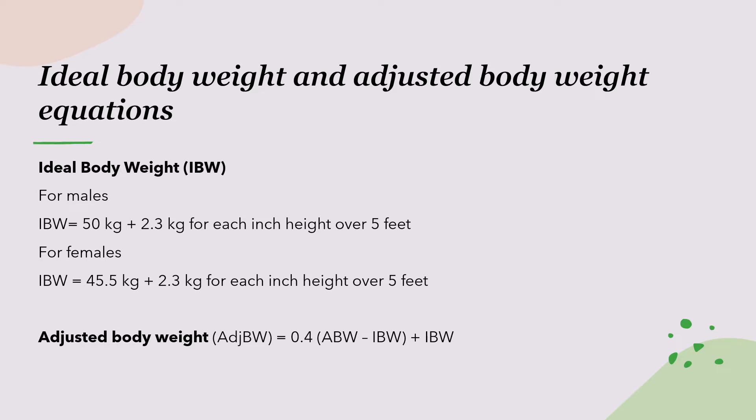Ideal body weight is usually what we use in the Cockcroft-Gault equation — except if the patient is obese, then you use the adjusted body weight. The adjusted body weight formula is: 0.4 times (actual body weight minus ideal body weight), plus ideal body weight. And as mentioned, if the actual body weight is less than the ideal body weight, you use the actual body weight in those cases.